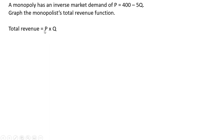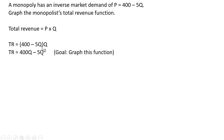We want to graph the monopolist's total revenue function. Total revenue is price times quantity — price is the per unit price times Q, the quantity sold. To create the total revenue function, I'm going to replace the P term with 400 minus 5Q, then multiply through by Q, giving us 400Q minus 5Q squared. So our goal is to graph this function.